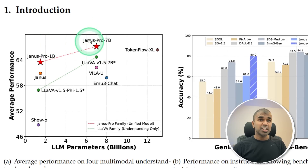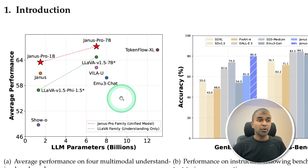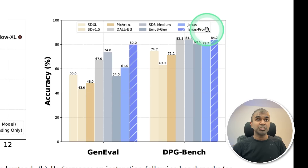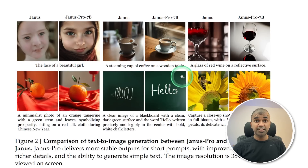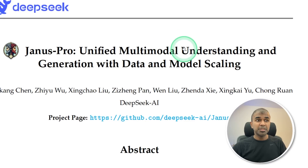Janus Pro 7B is better than LLaVA, another multimodal open source model, and it is performing at the top amongst open source models. When compared with Stable Diffusion, DALL-E 3, and SDXL, Janus Pro 7B is topping the list. Here are some examples — this model not only understands images but can also generate images.